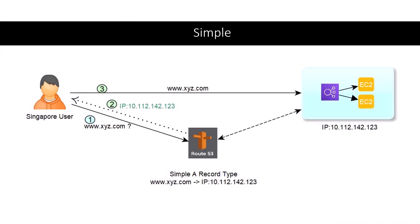The first is the Simple routing policy — this is the default Route 53 policy. The user calls xyz.com, Route 53 gives the IP address, and the user connects directly to the web server. There is nothing much to learn here; it's the default where Route 53 provides the IP address without checking the region or location.